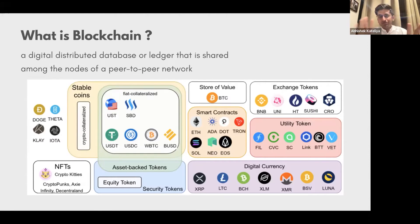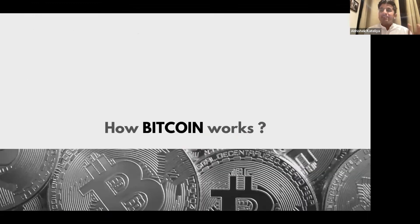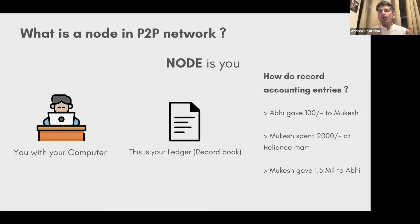When everybody is holding the same piece of data, that data is said to be distributed. When everybody has a copy and they connect to each other, it becomes a peer-to-peer network. There are many technologies — exchange tokens, BNB, utility tokens, Bitcoin, Ethereum, Polkadot — but they all fall into certain categories. This is the overall landscape.